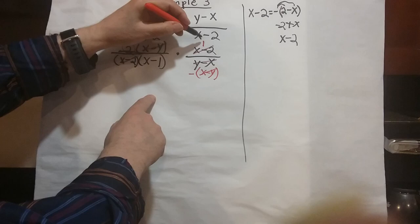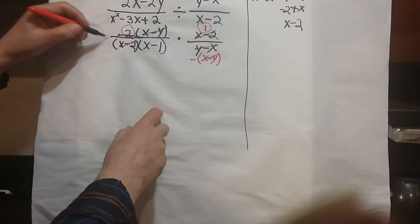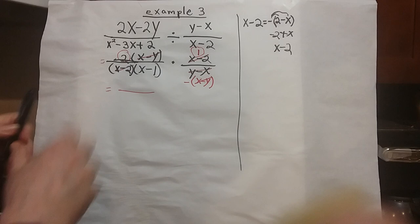You're going to multiply 2 times 1, and that'll give you 2 on the top. Let me use the black marker. Okay, so now we get a 2 on the top.